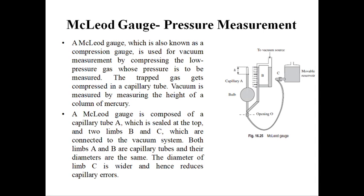Today we will be discussing about two techniques to measure pressure. The first one is the McLeod gauge and the next one we are going to study is the Pirani gauge. McLeod gauge was developed by Herbert McLeod in 1874. It is perhaps the most widely used and is employed as an absolute standard of vacuum measurement for pressures ranging from 10 to 10 power minus 4. Basically, McLeod gauge is used to measure vacuum.